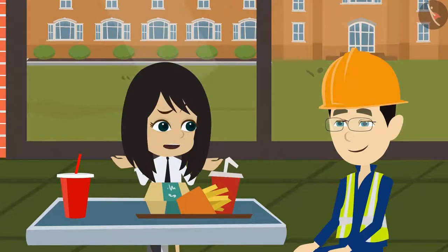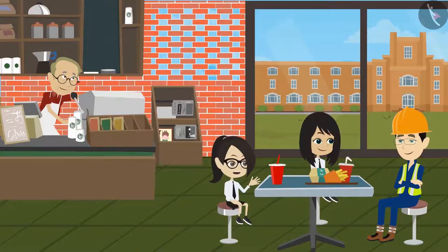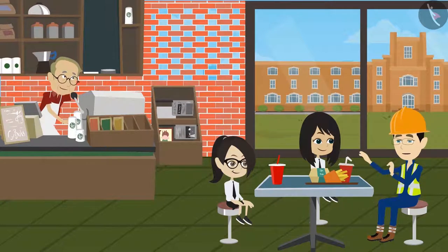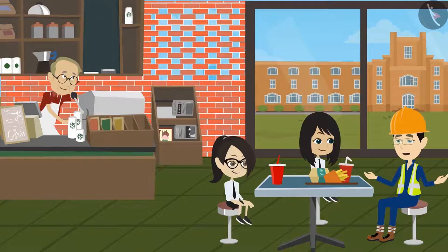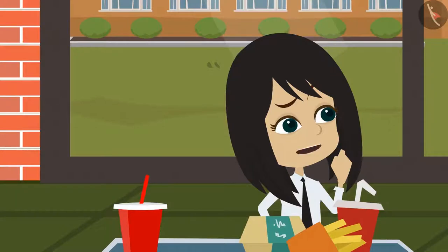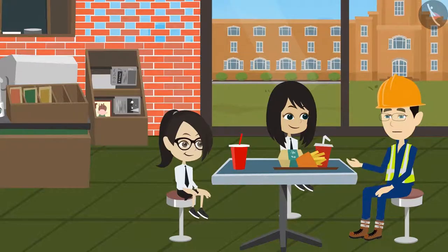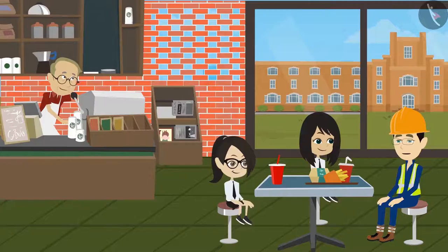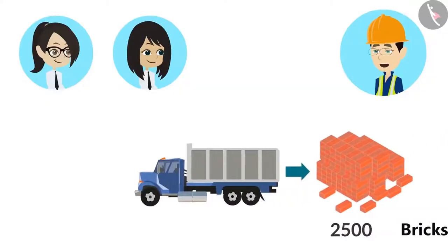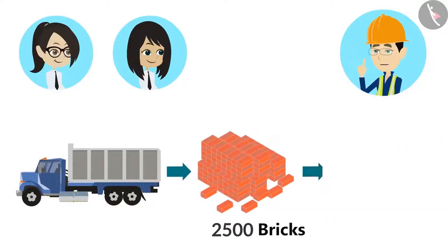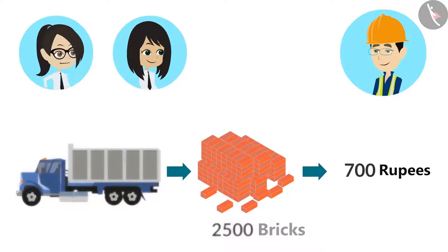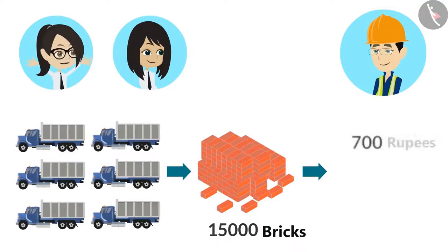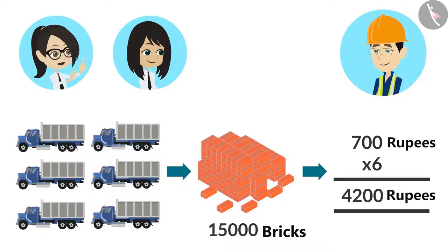This must have cost a lot of money. Yes, how much money did this cost? It's easy to calculate the expense of bricks — it only includes the cost of bricks and the transportation charges to deliver bricks to the construction site. Trucks are used to transport bricks from the furnace to the construction site. The trucks that transported bricks for your canteen charged rupees 700 for one round. So for six rounds, we multiply 700 by six, which equals 4200.